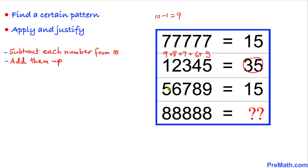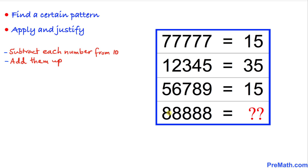Likewise, moving on to the next row, we subtract each individual number from 10 to get 5, 4, 3, 2, 1. Adding them up, we indeed get 15, which confirms the third row.